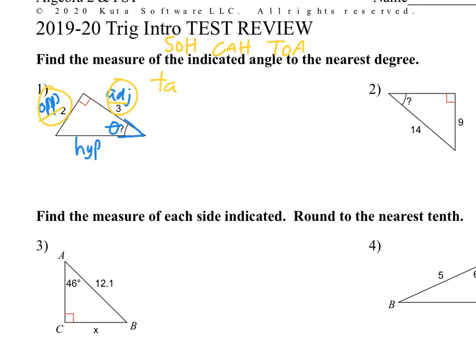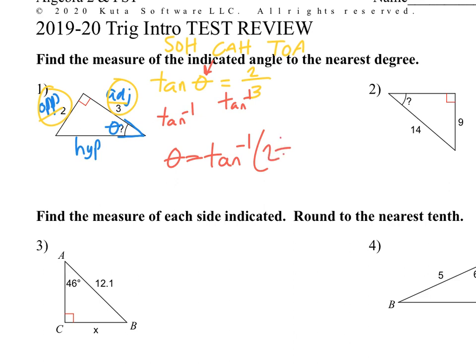So we're going to write ourselves a little trig equation. The tangent of some unknown angle theta equals the opposite side length over the adjacent side length. And the way you're going to solve this on your calculator, since we are trying to find that angle, we need to get rid of the tangent. The way you get rid of tangent is you do the inverse tangent — we're going to do that to both sides. You'll have to probably press the second button to get that inverse, then do 2 divided by 3. Just make sure you are in degree mode and that should give you the answer.